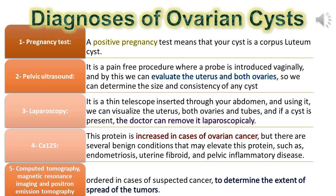Laparoscopy involves a thin telescope inserted through the abdomen to visualize the uterus, both ovaries, and tubes; if a cyst is present, the doctor can remove it immediately. CA-125 is a protein that is elevated in cases of ovarian cancer, but several benign conditions may also elevate it, such as endometriosis, uterine fibroids, and pelvic inflammatory disease. CT scan and MRI are ordered in cases of suspected cancer to determine the extent of tumor spread.